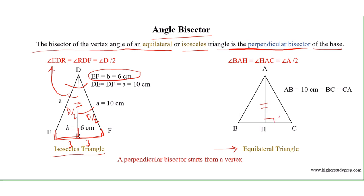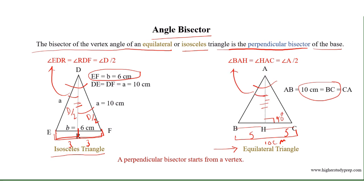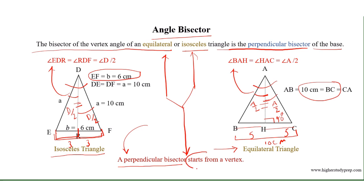ER equals RF equals 3 cm, where the base EF equals 6 cm. Similarly, for the equilateral triangle, AH is perpendicular to base BC where BC equals 10 cm, so BH equals HC equals 5 cm. The bisector AH of vertex angle A results in angle BAH equals angle HAC equals angle A divided by 2. A perpendicular bisector for equilateral and isosceles triangles starts from a vertex.